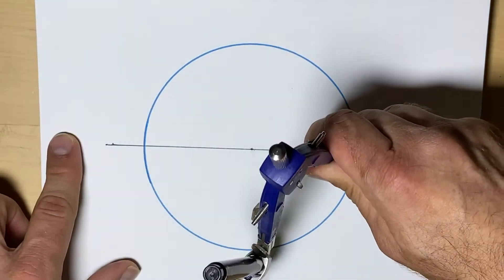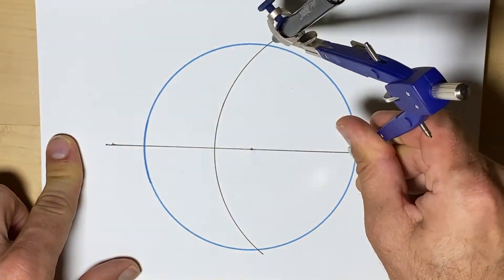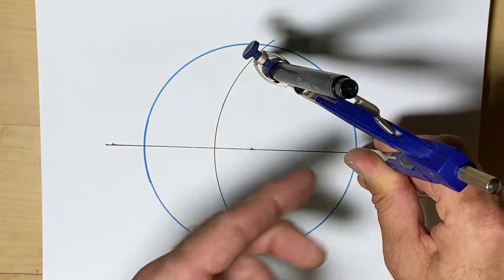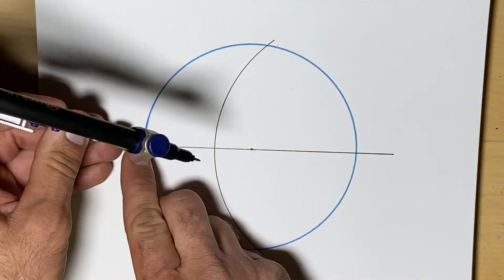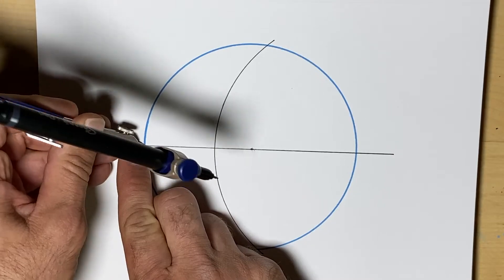The first step will be to draw an arc on one side, and without moving the compass, without adjusting it, we go to the other side. And we repeat that process.